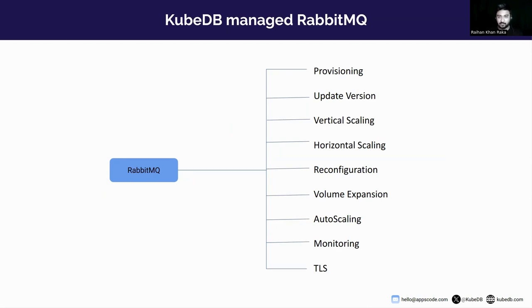With KubeDB-managed RabbitMQ, KubeDB can help you provision your cluster very easily with a simple CRD YAML. You can perform version upgrade, vertical scaling to increase CPU and memory at runtime, horizontal scaling to increase the number of instances, reconfiguration, volume expansion for increasing storage, auto-scaling, monitoring using Prometheus Grafana, and TLS support — all through simple CRD-based solutions.